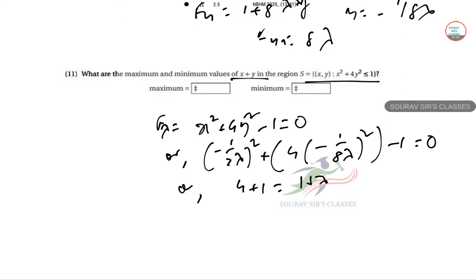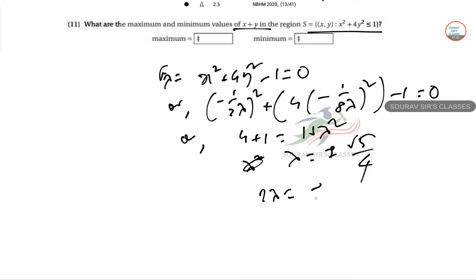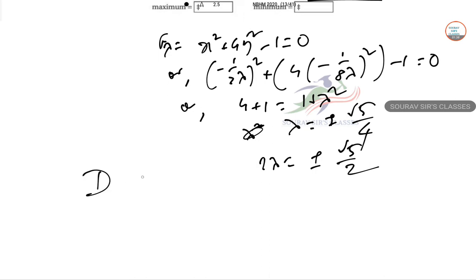This simplifies to 1 over 4 plus 1 over 16 equals 1, so 5 over 16 equals lambda squared. Therefore lambda equals plus or minus square root of 5 over 4, which means 2 lambda equals plus or minus square root of 5 over 2.